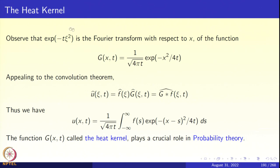Now that we have identified the function whose Fourier transform is e^(−tχ²), we can write û(χ,t) = f̂·Ĝ. By the convolution theorem, the Fourier transform of a convolution is the product of the Fourier transforms. So applying the inversion theorem, u(x,t) = (1/√(4πt))∫_{−∞}^{∞} f(s)·e^(−(x−s)²/(4t)) ds. We have obtained an integral representation for the solution of the initial value problem.